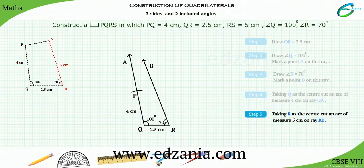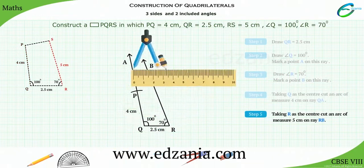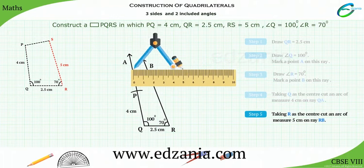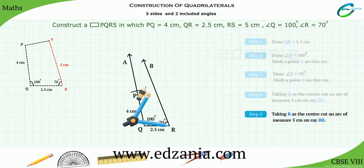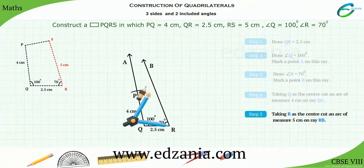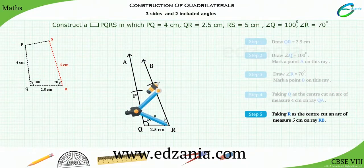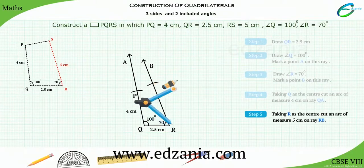Step 5. Construct RS equal to 5 cm. Placing a compass pointer on point R and taking measurement of 5 cm, cut an arc of length 5 cm on ray RB. Name this point as point S.